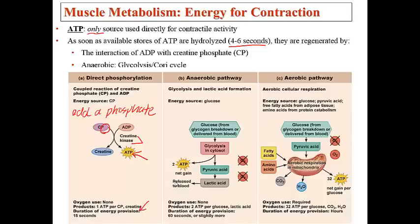This provides energy for up to 15 seconds, as shown at the bottom of the slide. The second mechanism to generate ATP, for a little bit longer period of time, is anaerobic activity. Anaerobic means without oxygen, and this is what we commonly think of as anaerobic types of exercise — such as lifting weights or doing a bench press.